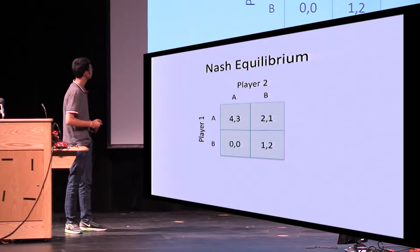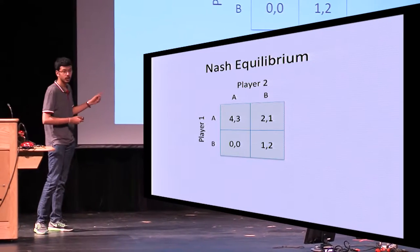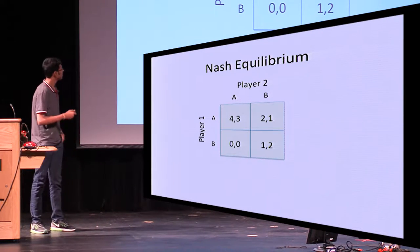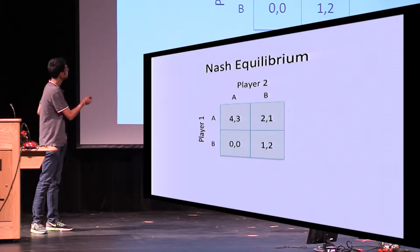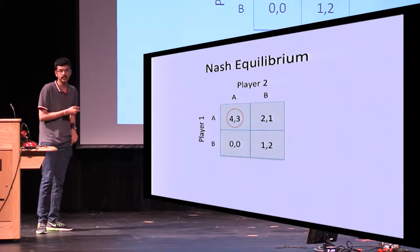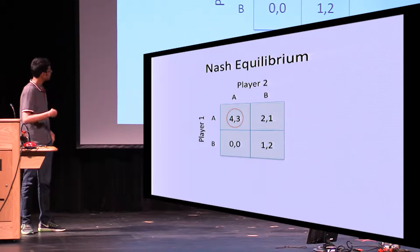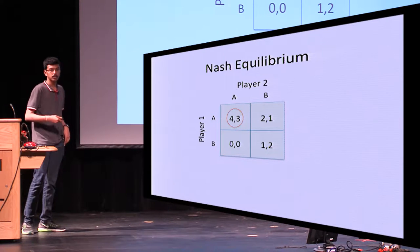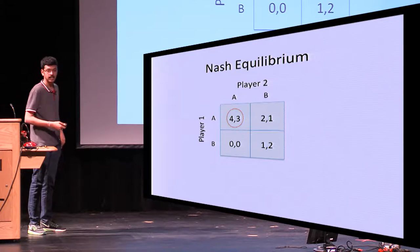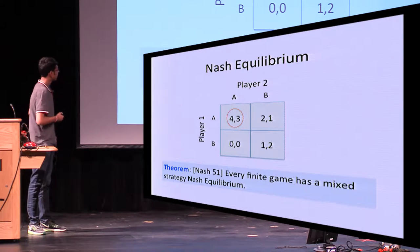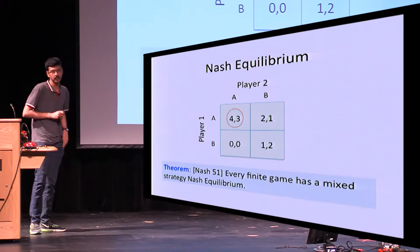To illustrate, let's consider a toy example of a game between two players with the following payoff matrix. From the informal description that I just gave, it's easy to see that A is actually the Nash Equilibrium for this game. If you allow the players to define a probability distribution over the set of strategies available to them, then Nash, in fact, proved that every finite game has such an equilibrium.